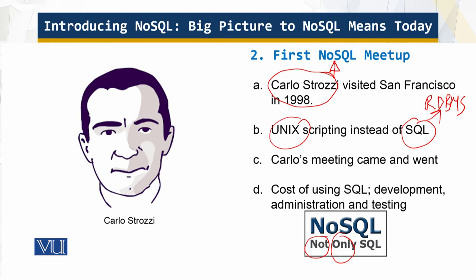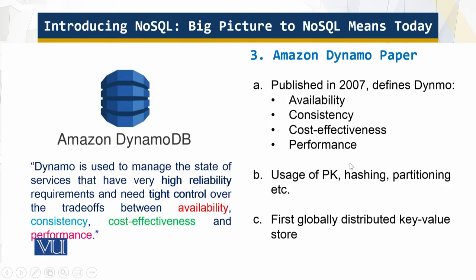SQL is for the RDBMS. There is a cost to using SQL: complex queries are hard to debug and even harder to make perform well, which increases the cost of development, administration, and testing. This is the reason for the growing popularity of NoSQL.